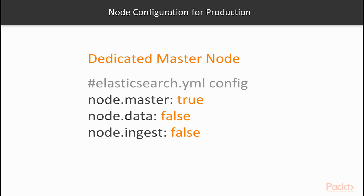Note that by default all nodes are master-eligible, data, and ingest nodes. Making dedicated nodes requires that you adjust the elasticsearch.yml configuration file within each node. To set up a dedicated master node, you set node.master to true, while setting node.data and node.ingest to false. Creating a dedicated data node simply involves setting node.data to true, while setting node.master and node.ingest to false in the configuration file of each node you wish to be a dedicated data node.